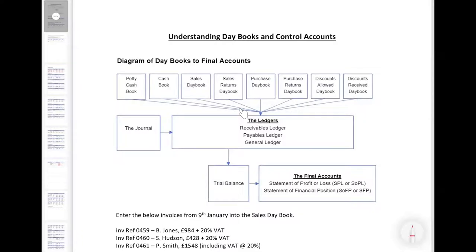Today we'll be looking at this process through from the day books to the ledgers. We're going to look at some transactions for each, post them into the ledger accounts, and then look at the control accounts. This then follows to trial balance and final accounts, which we'll pick up in a different session. For today, just the day books and the ledger accounts.